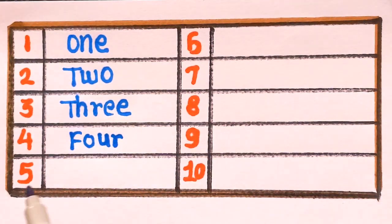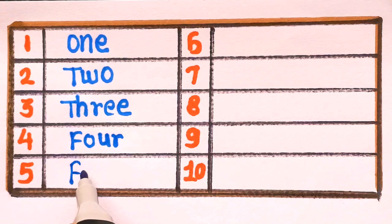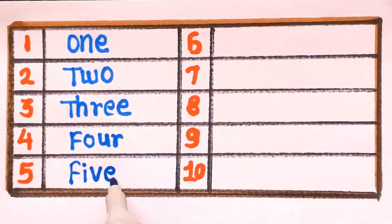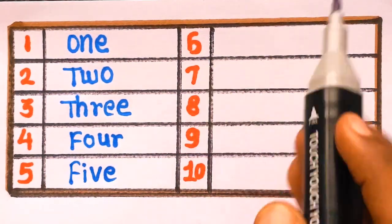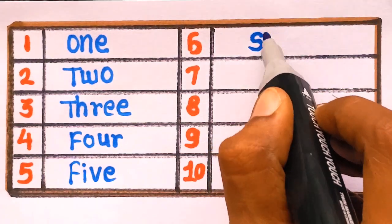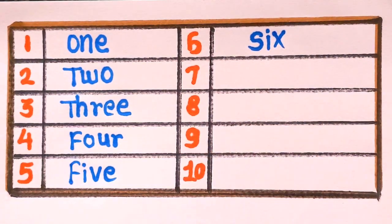Four. Number 5. F-I-V-E. Five. Next is number 6. S-I-X. Six.